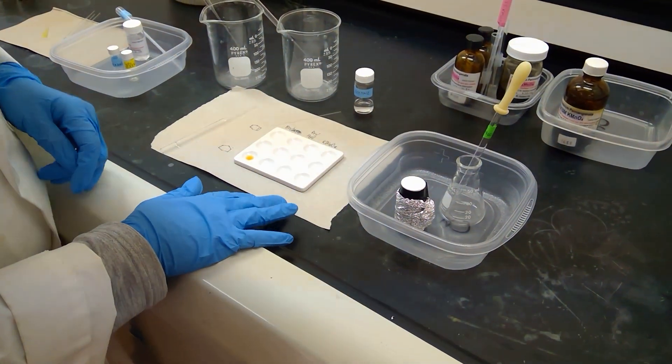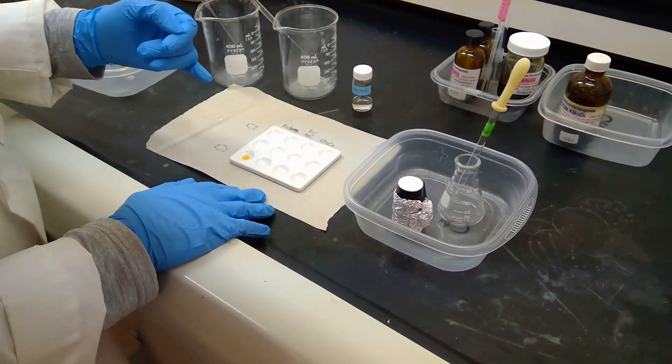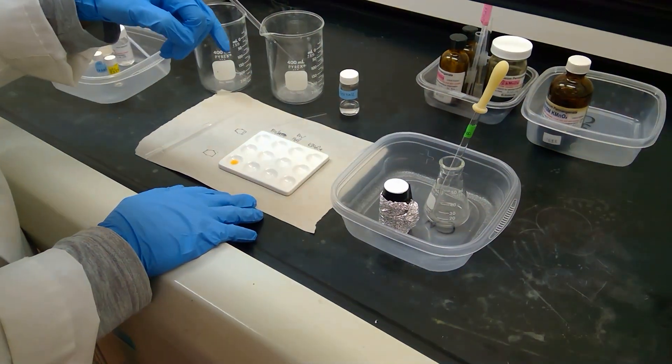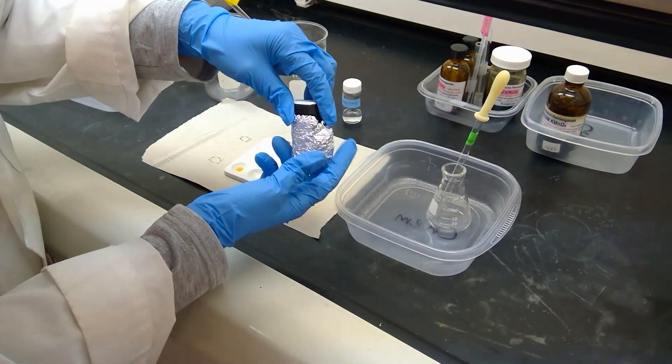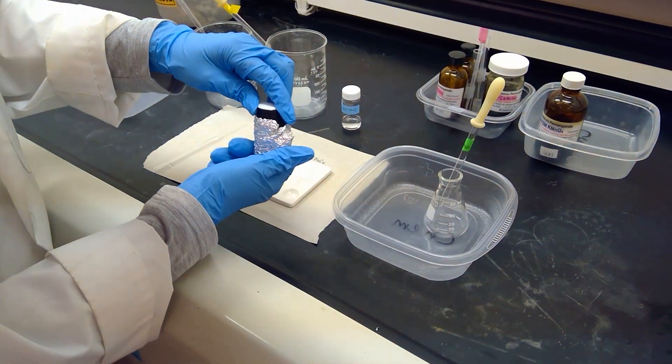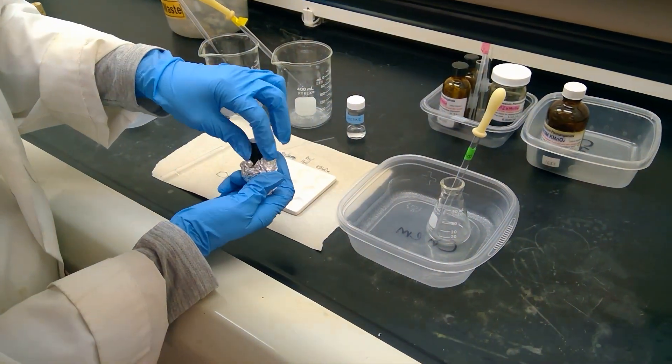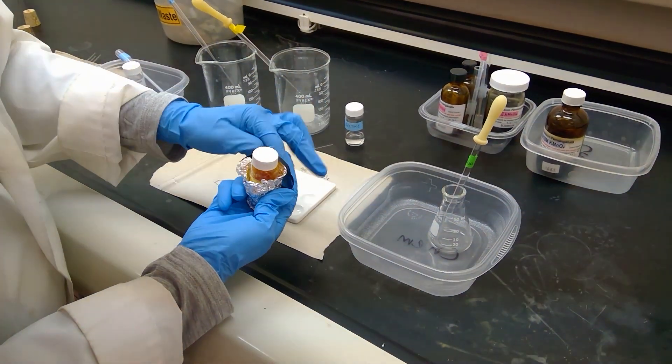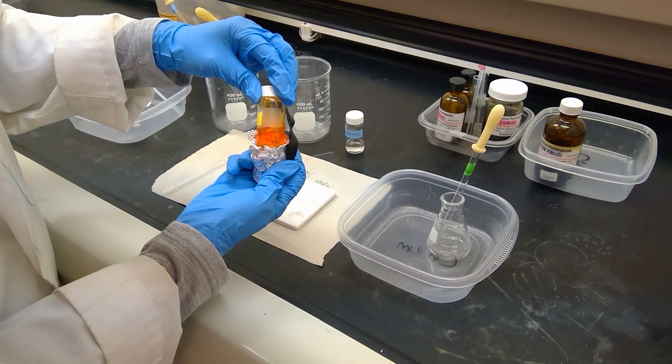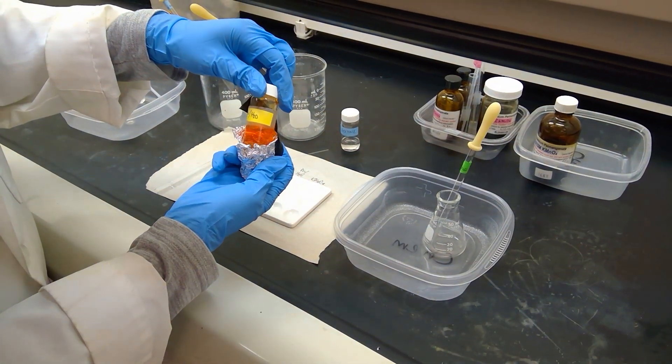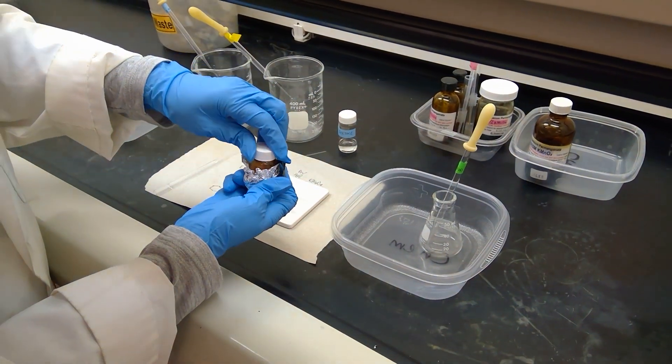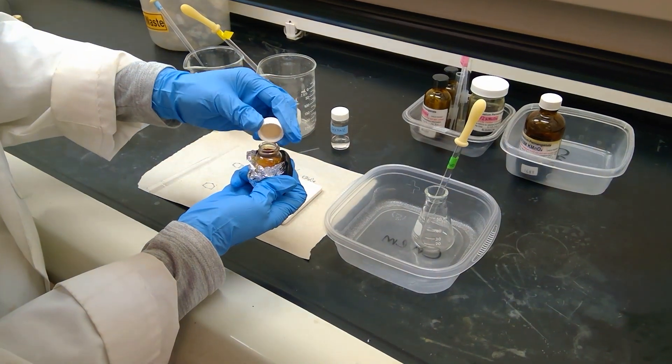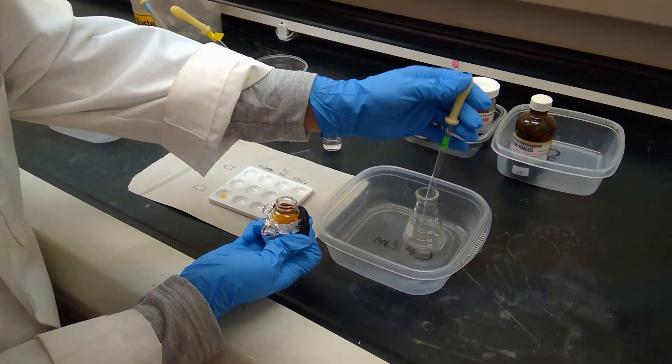Next up, we're going to test our same two compounds, cyclohexene and cyclohexane. But this time, I'm going to use an aqueous solution of bromine. I have it here covered with foil because it is light sensitive. It is an orange solution dissolved with some water. I'm going to add five drops to each of my wells here.